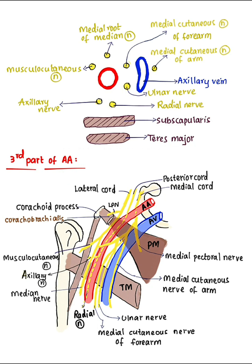Relations of the third part of the axillary artery. Laterally, there is the musculocutaneous nerve. Posteriorly, there is the axillary nerve and radial nerve — which are branches of the posterior cord of the brachial plexus — along with subscapularis in the upper part and teres major in the lower part.